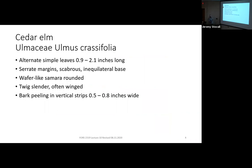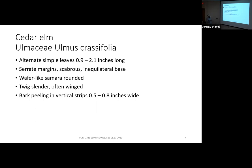Some of these elms we haven't really learned yet. You've got cedar elm, Ulmus crassifolia. It has alternate simple leaves, 0.9 to 2.1 inches long, with serrated margins. They're scabrous with an equilateral base. Wafer-like samaras tend to be round, slender twigs — twigs often winged. And then the bark is peeling in vertical strips, 0.5 to 0.8 inches long.